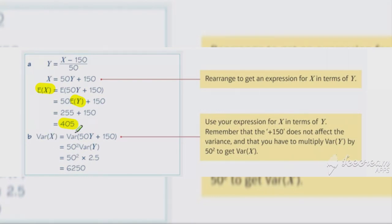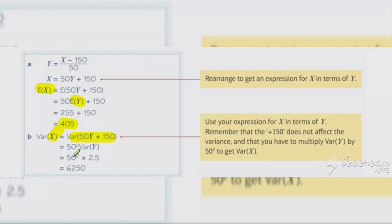Similarly for the variance: the variance of x is equal to the variance of 50y plus 50. Remember the constant 50 doesn't play a part in the calculation — we square the 50 that's our 'a', so a² times the variance of y, and that gives us our answer of 6,250.